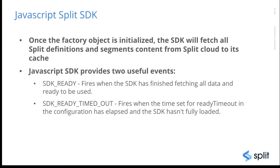The JavaScript SDK has a factory object, and from the factory object we can initialize the library and then we can get the client object from it, which we will use to call getTreatment. That's how we can get our treatment so that we can enable or disable a feature.